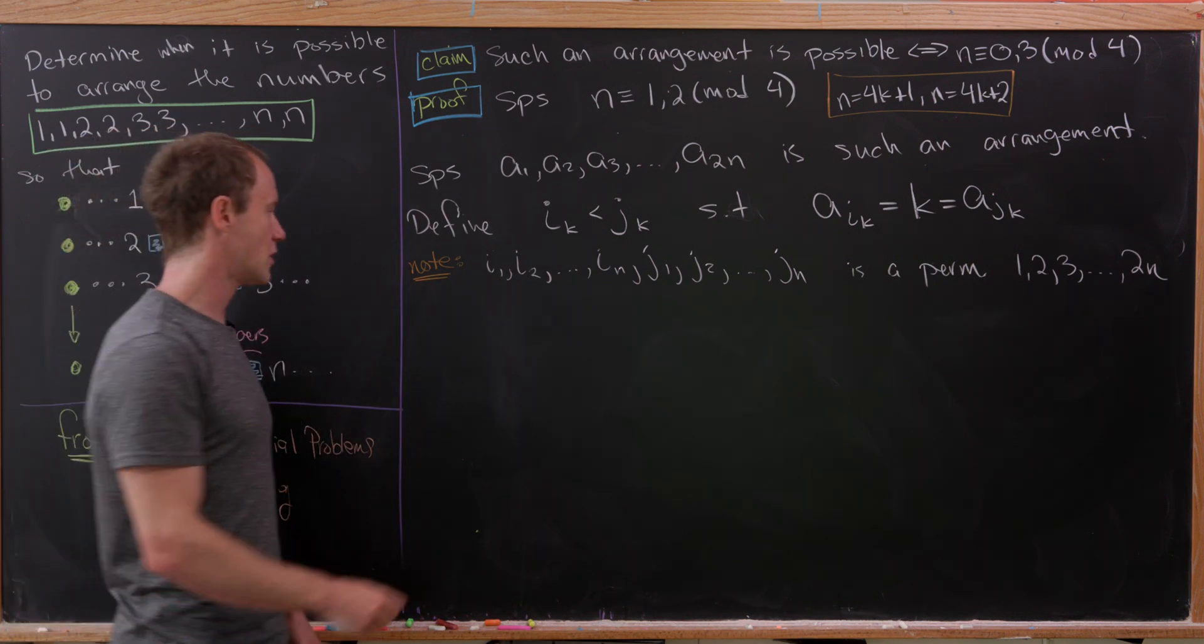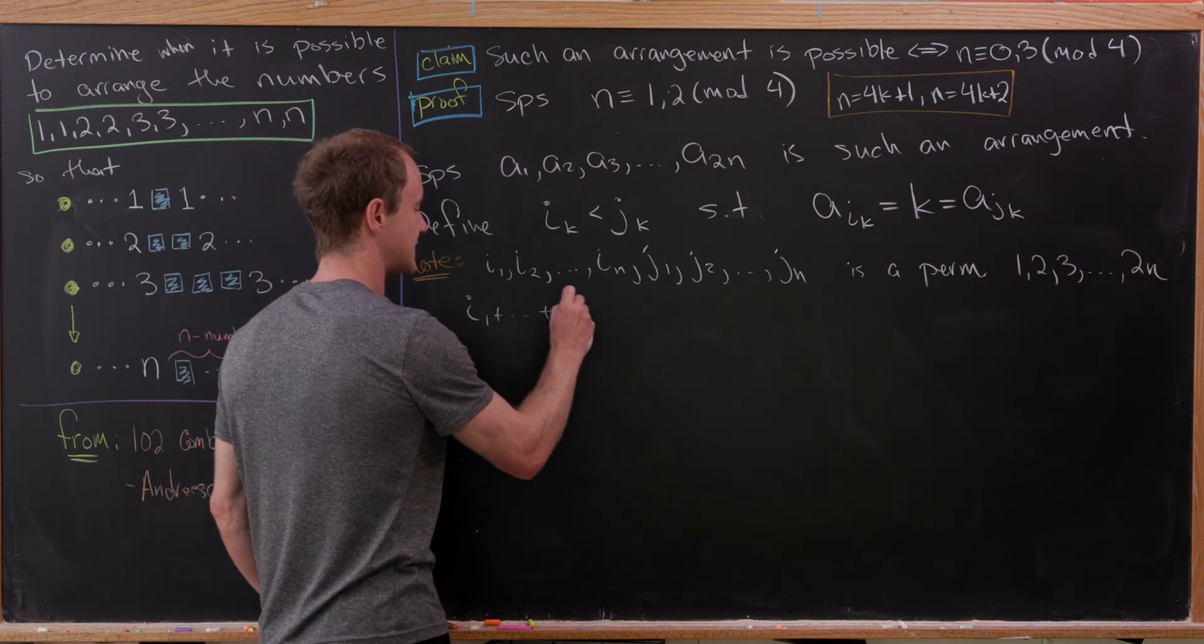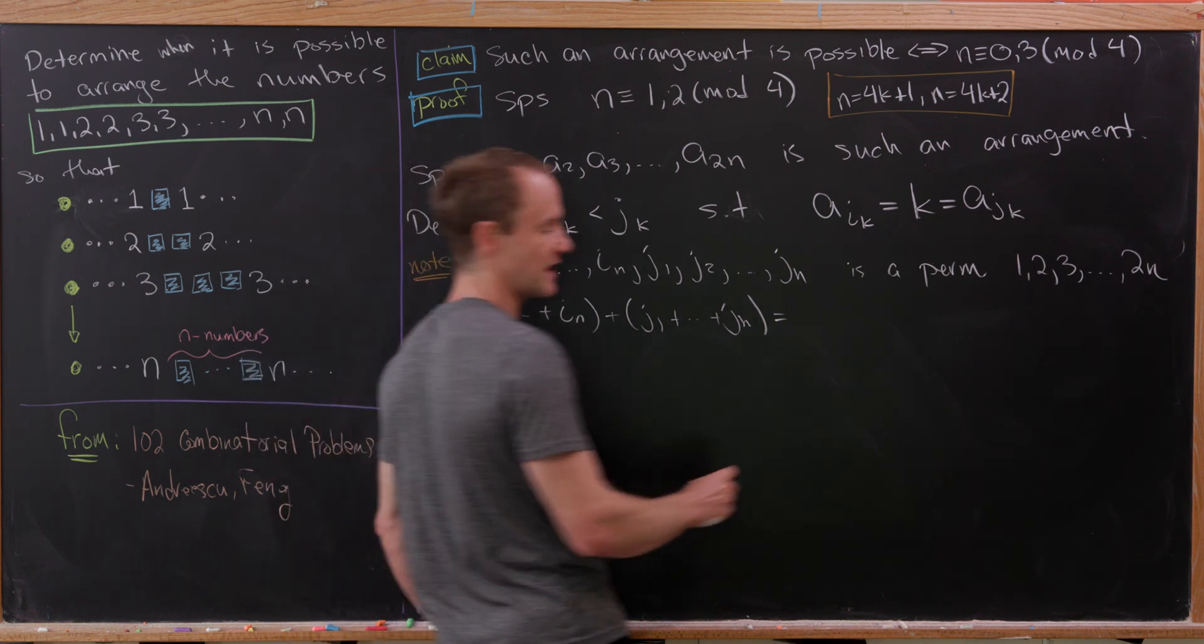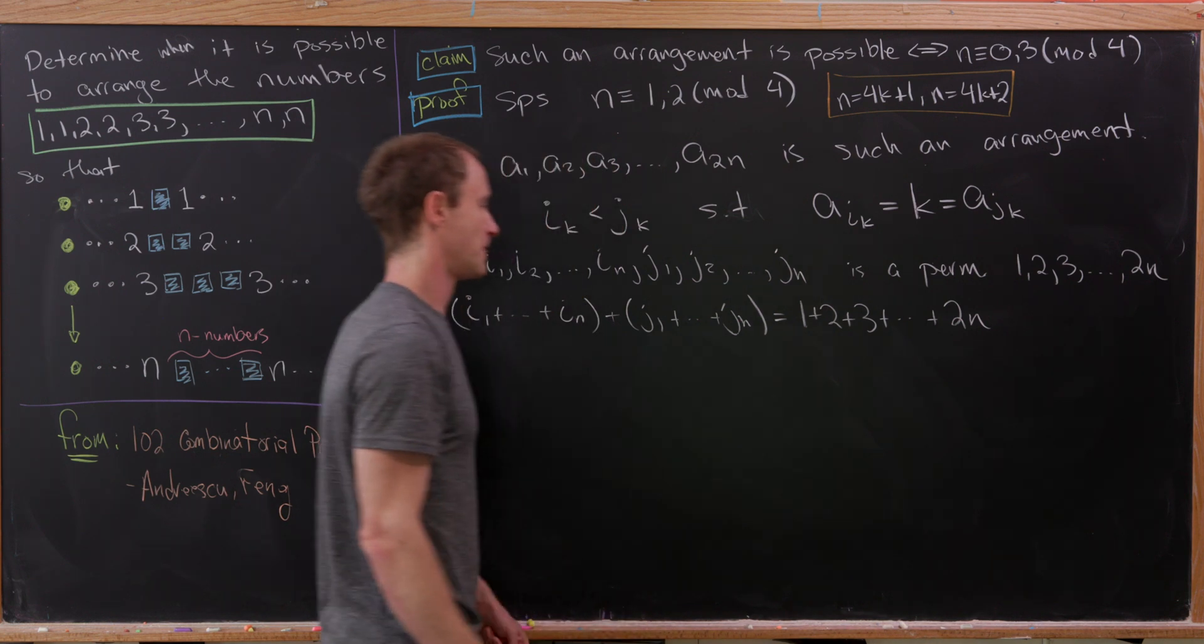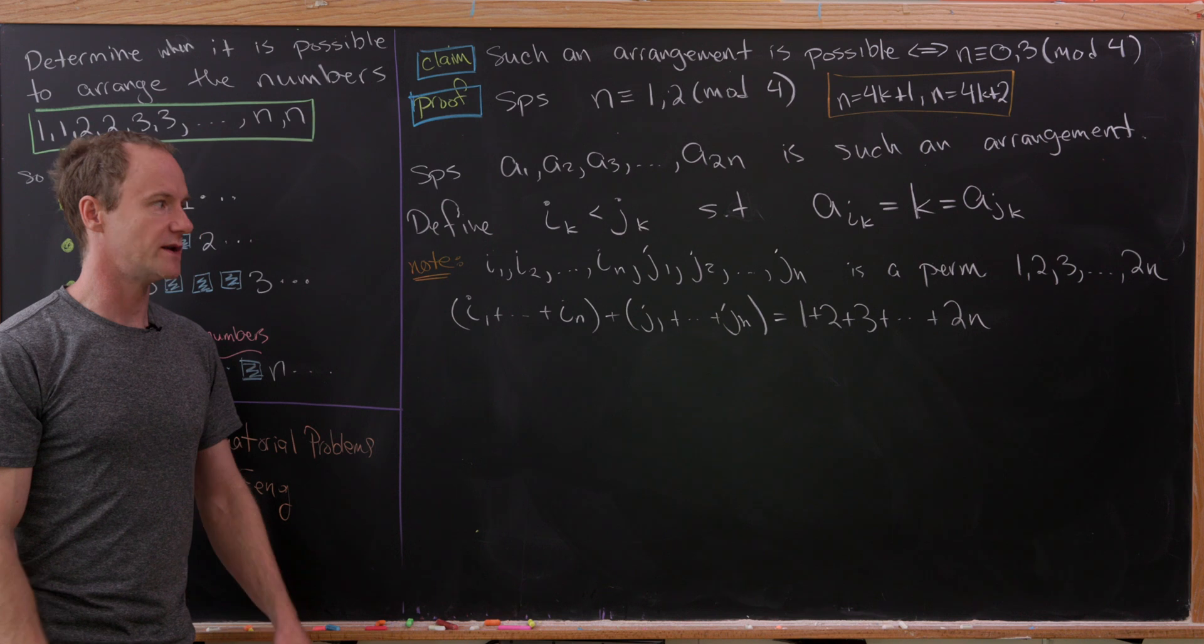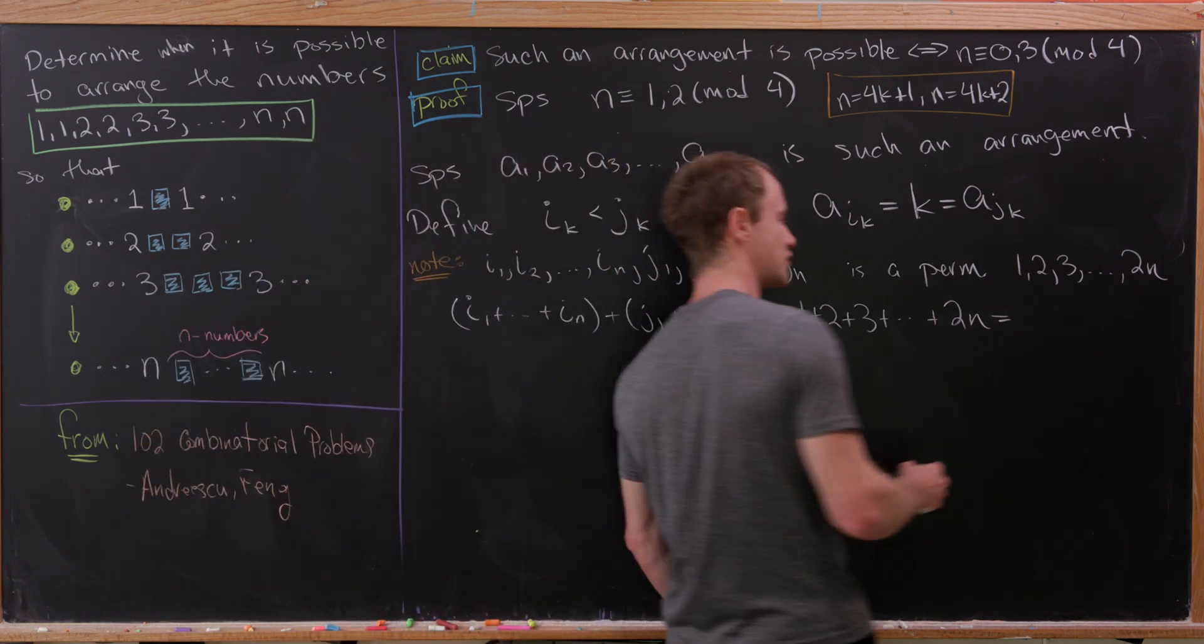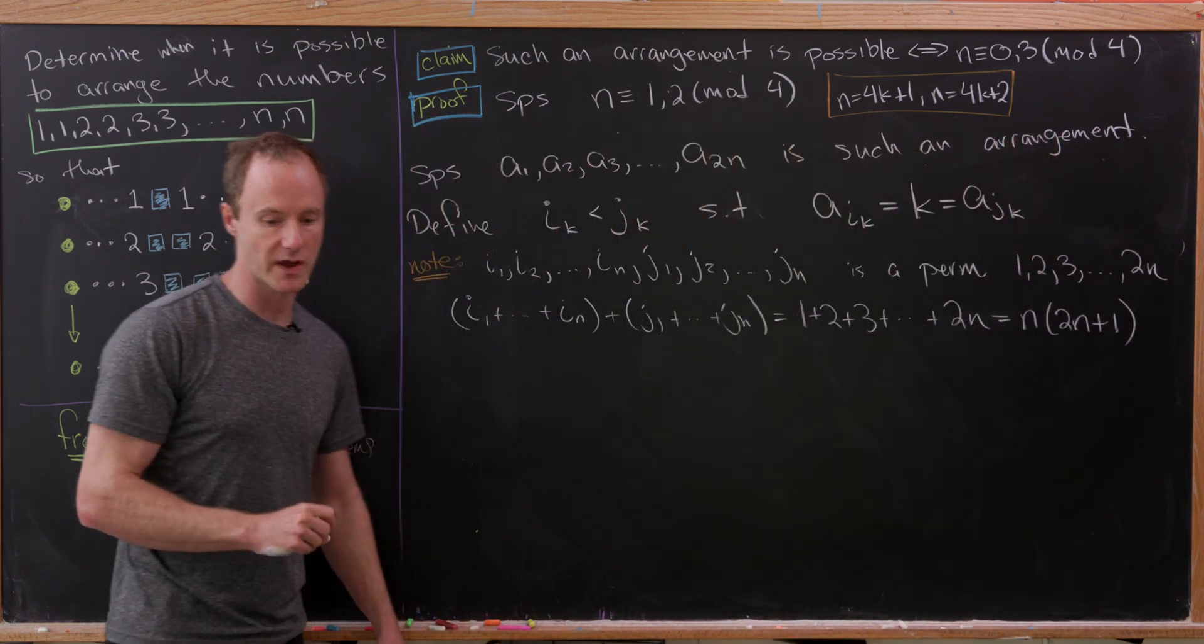Now let's observe that if we take I sub 1 add it up to I sub N, and then add that to J sub 1 add it up to J sub N, that's going to be the same thing as 1 plus 2 plus 3, all the way up to 2N. That's just by the commutative rule of addition. We're just adding the numbers 1 to 2N in a different order. But there's a fairly well known closed formula for this, the triangular number. This is the 2Nth triangular number. This is N times 2N plus 1.